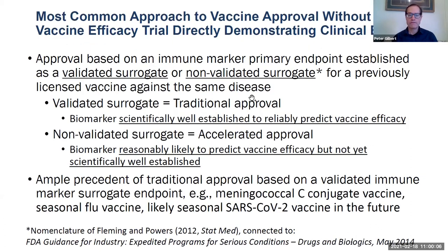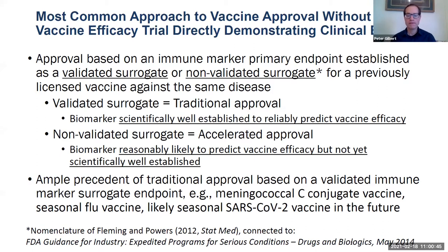The reason I'm focusing on an immune marker mediator approach is because if you look at the history of vaccine development, immune markers have often been successfully used for approval of vaccines. There are many examples where vaccines have been approved based on an immune marker surrogate endpoint accepted by regulatory agencies. Typically, regulators distinguish between a validated surrogate — a biomarker scientifically well established to reliably predict vaccine VE — and a non-validated surrogate, which is reasonably likely to predict VE but not yet scientifically established. If established, it can be used for traditional approval, requiring only several hundred vaccinees meeting a pre-specified benchmark on an antibody immune marker. This is used for many vaccines, for example the seasonal flu vaccine.